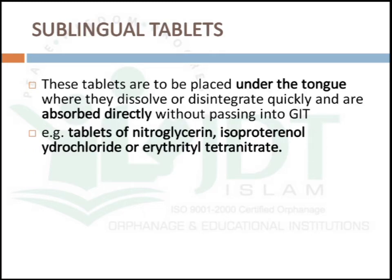Sublingual tablets are intended to be placed under the tongue, where they dissolve and disintegrate quickly and are absorbed directly into the systemic circulation without passing into the gastrointestinal tract. Examples include tablets of nitroglycerin, isoproterenol hydrochloride, and erythrityl tetranitrate.